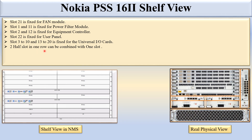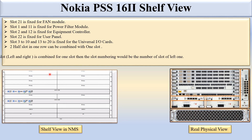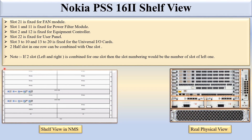Two half-height slots in one row can be combined into one slot. For example, in the first row on top there is slot 10 and slot 20 — these two slots can be combined together and one full slot card can be inserted. If the left and right slots are combined together, the slot numbering will be the left slot's number. So if slot 10 and slot 20 are combined into a single slot, the slot number will be 10 for that single slot.